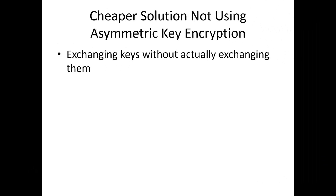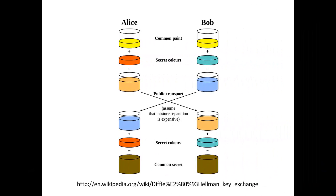A cheaper solution, not using asymmetric key encryption, is somehow exchanging keys without actually exchanging the keys themselves. This is what the Diffie-Hellman key exchange algorithm basically does — it magically allows you to exchange keys without actually exchanging the secret key itself, especially in the context of symmetric key encryption. So how do we exchange keys without actually exchanging them? That's a good question to ask.